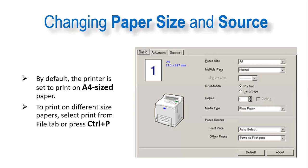The last topic is changing paper size and source. By default, the printer is set to print on A4 size paper. It's already set for you, but you can change it. To print on different size papers, select Print from the File tab or press Ctrl+P.